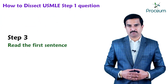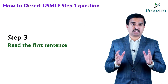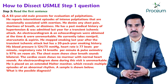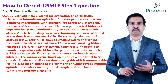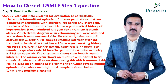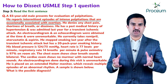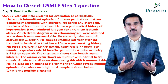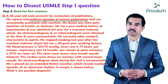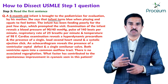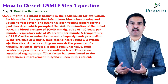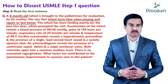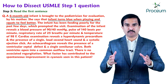Step three is to read the first sentence. Do not take this sentence for granted, because the first sentence always tells you the patient's age, biological sex, and chief complaint. For example, an 83-year-old male presenting with chest palpitations most likely points to atrial fibrillation, not a congenital defect. But if the question begins with a six-month-old who turns blue (cyanosis) when playing and squats to feel better, it's most likely a congenital defect, not atrial fibrillation. Age is the most important factor along with the chief complaint.